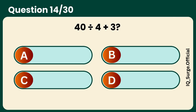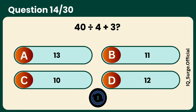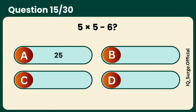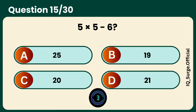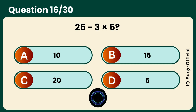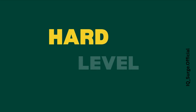Can you solve 40 divided by 4 plus 3? What is the result of 5 times 5 minus 6? 19. What is the result of 25 minus 3 times 5? 10 is the correct answer.